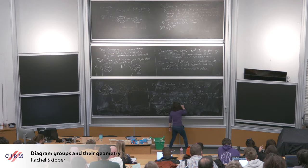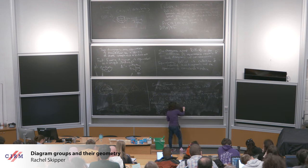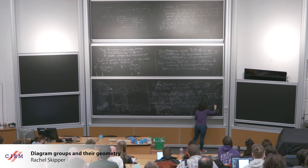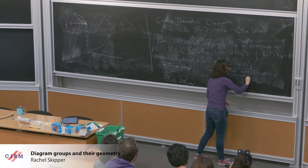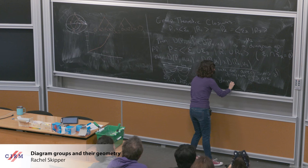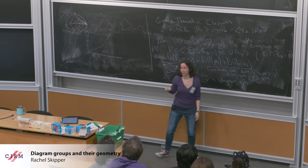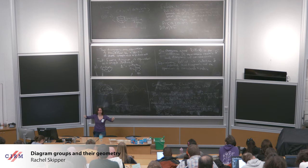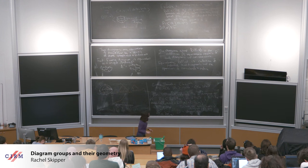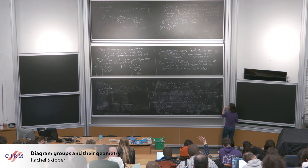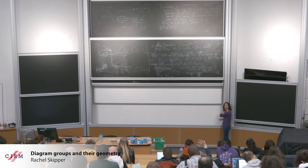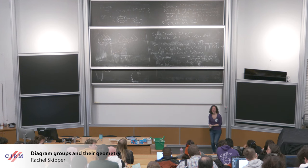In fact, you can also take infinite direct sums of diagram groups — these are also diagram groups. Obviously this proof requires a little more work since we're only allowed finite words. The idea behind all these closures is the same: you start with your diagram group, and then you build some new presentation that lets you realize the desired construction. Free products of diagram groups are also diagram groups — that's another closure property.